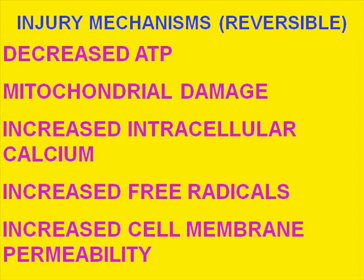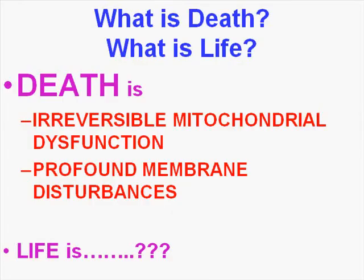Increased cell membrane permeability is also a reversible change, but any of these things, if extreme — like mitochondrial death or irreversibly increased cell membrane permeability — will then cause cell death. It's easy to define death but hard to define life. Death in a cell is simply irreversible mitochondrial dysfunction and/or profound membrane disturbances. Whatever life is, we can leave that to the philosophers.